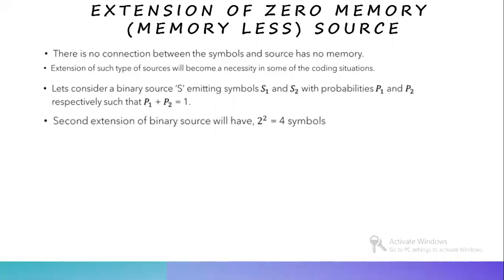The second extension of a binary source will have 2 squared equal to 4 symbols. It's 2 squared because we have only two symbols. If we have three symbols, it will be 3 squared symbols. It will always be the square of the number of symbols present. Now let us see how to calculate the probabilities of these second extension symbols.